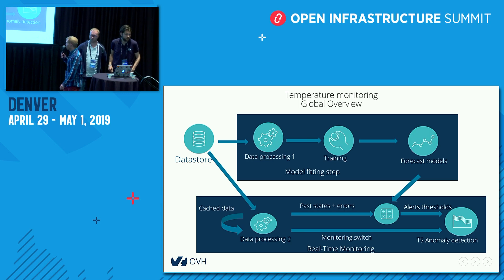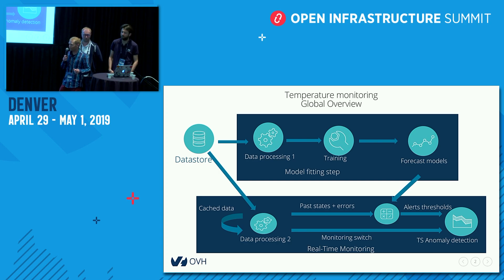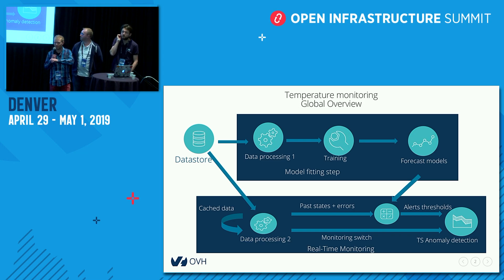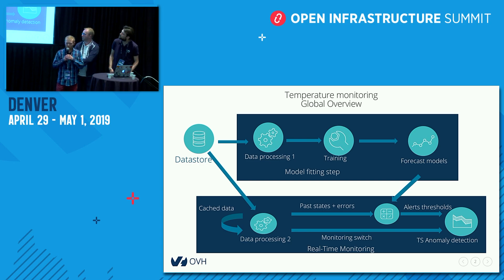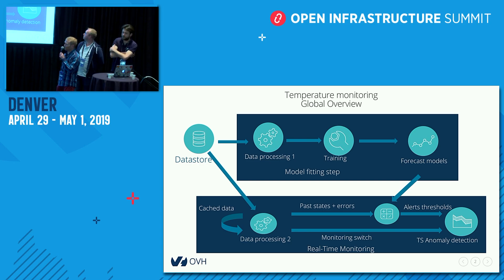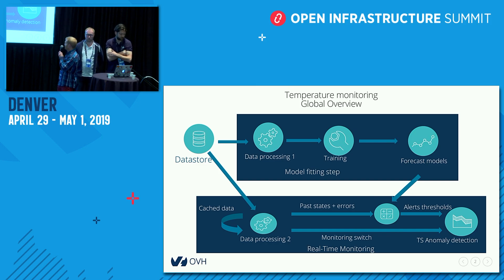What we call a logical group can be the server room, it can be the server rack, it can be the server itself — anything that can help us in troubleshooting where the cooling issue is. Once we have these aggregates, we build a forecast model for every aggregate, which we then reuse during the monitoring step to generate alerts.